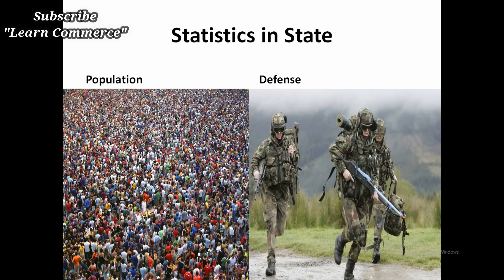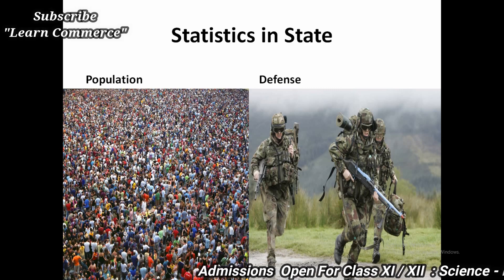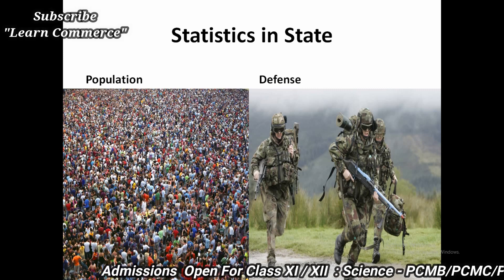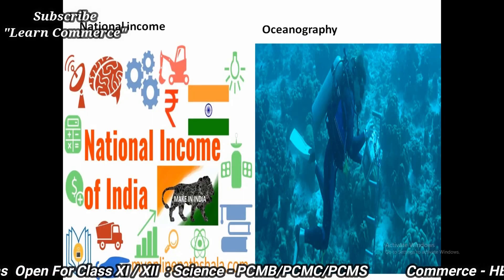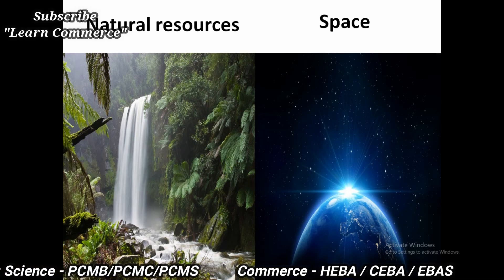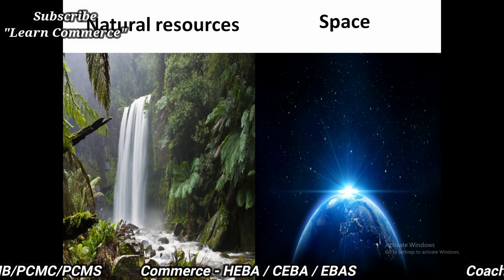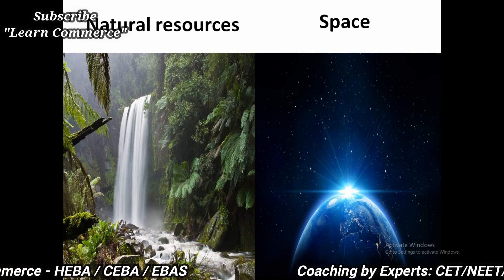1. Statistics in State. For the effective functioning of the state, statistics is very important. Different departments and authorities require various facts and figures on different matters. They use this data to frame policies and guidelines in order to perform smoothly. Today, state authorities collect statistics through their agencies on multiple aspects like population, agriculture, defense, national income, oceanography, natural resources, space, and research, etc. The availability of statistical information enables the government to frame policies and guidelines to improve the overall working of the system.